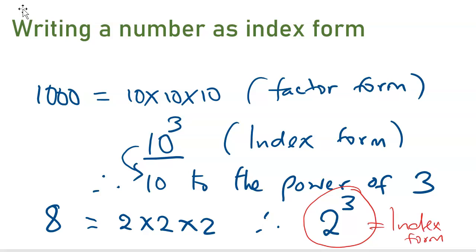Let me give you another example. Say we have 25, 25 can be written as 5 times 5. So when you write this as index form, it will be 5 to the power of 2, because they are only two.